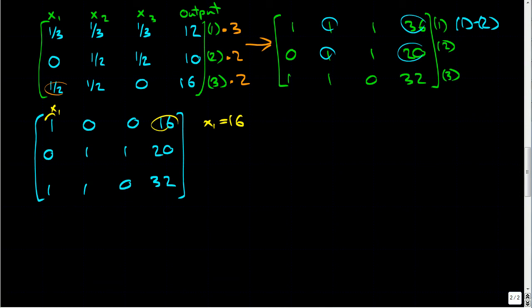And we know that x1 plus x2 equals thirty-two. So by plugging in sixteen for x1, that means we have sixteen plus x2 equals thirty-two. So that just means x2 equals thirty-two minus sixteen, which equals sixteen.